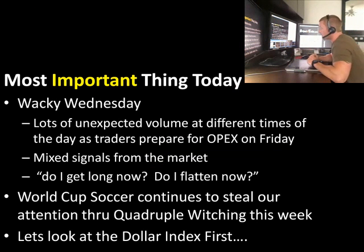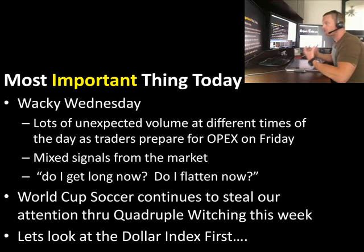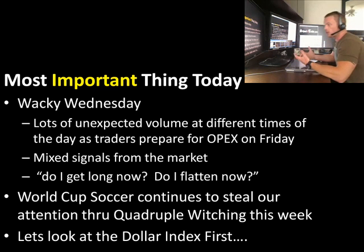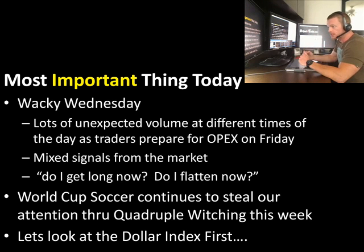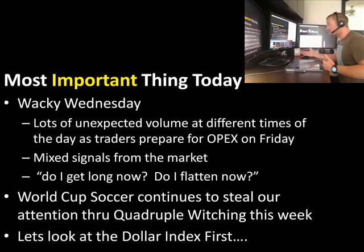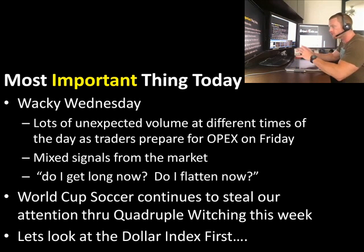Today was Wacky Wednesday. Wacky Wednesday is characterized by being very unpredictable — there's lots of unexpected or unpredictable volume at different times of the day as traders prepare to shuffle things around for OpEx on Friday. What it results in is mixed signals: do I get long here, do I flatten right now? We saw a great example in our first trade today. We had a two-step pattern, saw lots of sellers jump in, momentum pointing down. Under normal conditions, this would have been an easy green light for a short trade. I took the short trade, but those big sellers were an example of that unexpected volume — the loss came quickly as it reversed. So be careful, pay attention to your rules, and don't be afraid on days like today to look for a little bit more confirmation.